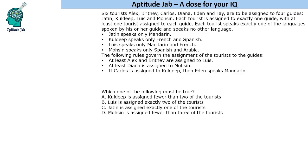Each tourist speaks exactly one of the languages spoken by his or her guide and speaks no other language. So they are allotted based on the languages that they speak. Jatin speaks only Mandarin, Kuldeep speaks French and Spanish, Louis speaks Mandarin and French, and Mohsen speaks Spanish and Arabic.